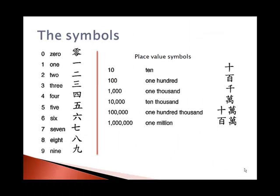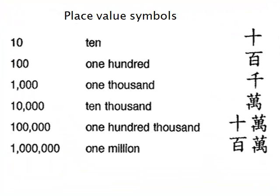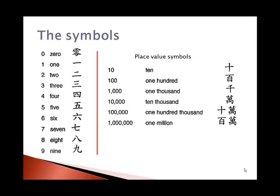There's also these place value symbols over here on the right for ten, hundred, thousand, ten thousand, hundred thousand, and million. And so how these are written, we can either write them horizontally from reading it from left to right like we would read a Hindu-Arabic numeral, or actually also the Chinese also wrote vertically from top to bottom. I'm going to give my examples horizontally.